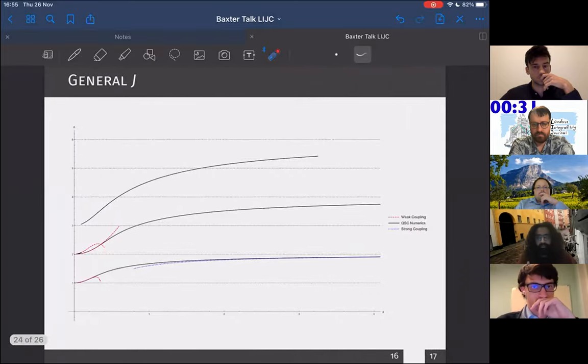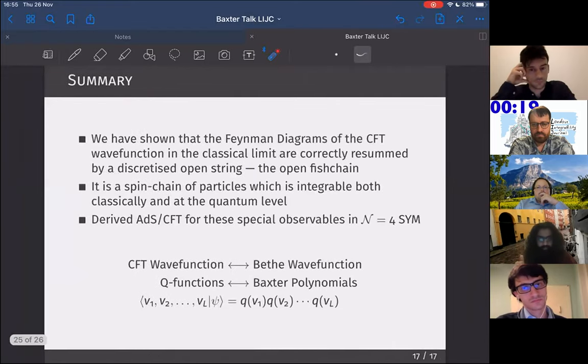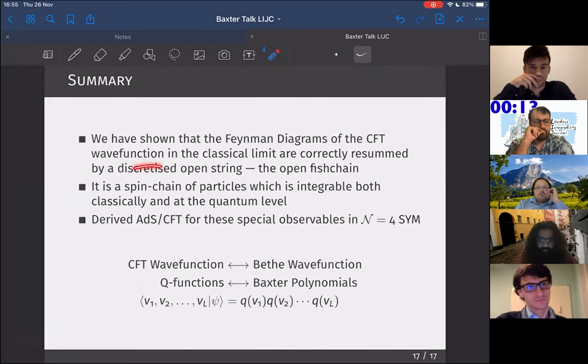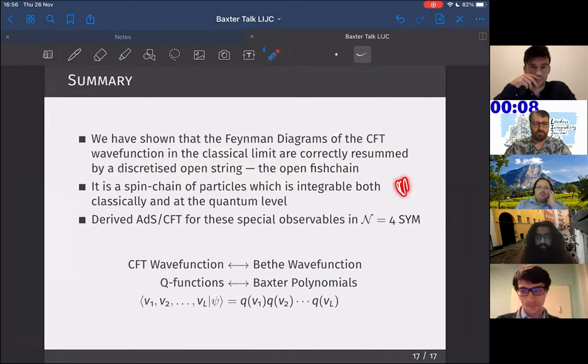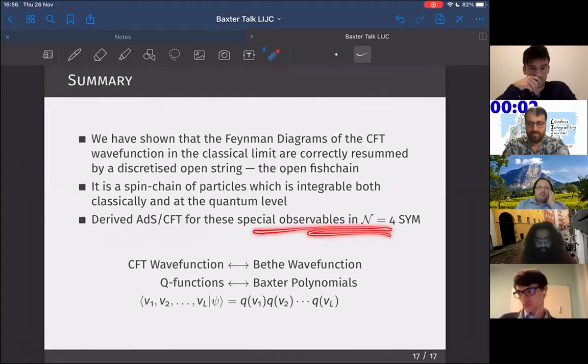Recently, I've been able to generalize this for any J. With no orthogonal insertions and any number of parallel insertions, I can produce all of the states, which is nice. Quick summary: We have shown that the Feynman diagrams of the CFT wave functions in the classical limit are correctly resummed by a discrete open string, which is integrable both in the classical and quantum level. We have actually derived the AdS-CFT correspondence for these observables. I don't have any more time, but thank you.